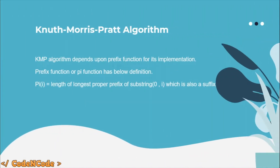KMP algorithm is a string matching algorithm, and its implementation depends upon the prefix function. We will first study the prefix function and then move on to understanding the KMP string search algorithm. The prefix function is also known as the pi function, and we store it as an integer array. Pi of i would be the length of the longest prefix of substring zero through i which is also a suffix of that substring.